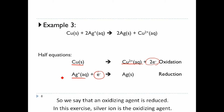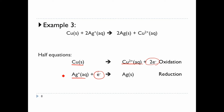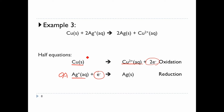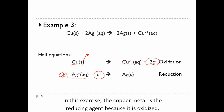In this exercise, silver ion is the oxidizing agent. For a reducing agent, it reduces something else with itself being oxidized. In this exercise, copper metal is the reducing agent because it is oxidized.